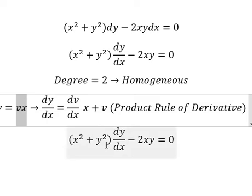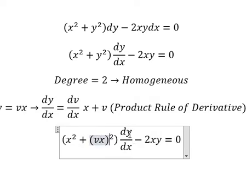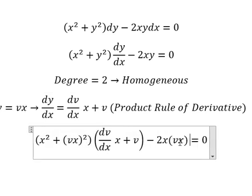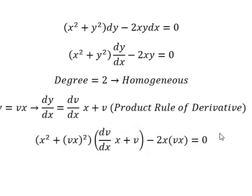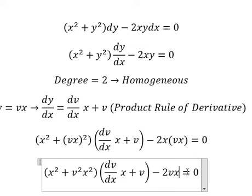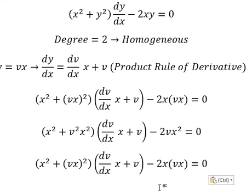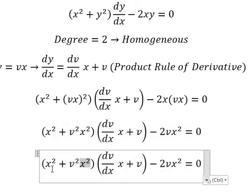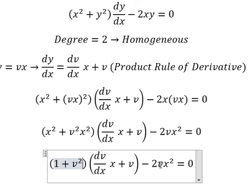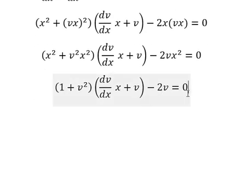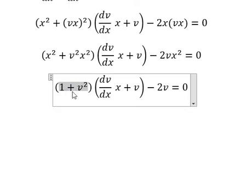So y we change to v, and dy over dx we change by this expression. For y we change to v. This gives us v squared x squared and 2v x squared. So we have x squared and x squared — we can simplify. Now I will put negative 2v to the right, and then divide both sides by 1 plus v squared.